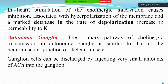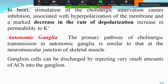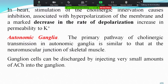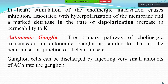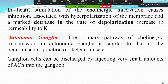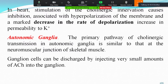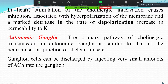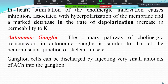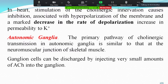In the heart, acetylcholine has an inhibitory action — decreasing heart rate. Stimulation of cholinergic innervation via the vagus nerve causes inhibition associated with hyperpolarization of the membrane and a marked decrease in the rate of depolarization, due to increased permeability to potassium. In autonomic ganglia, the primary pathway of cholinergic transmission is similar to that of the neuromuscular junction of skeletal muscles. A ganglion cell can be discharged by injecting very small amounts of acetylcholine into the ganglia.